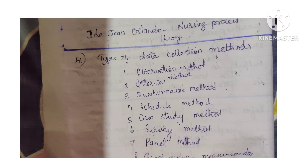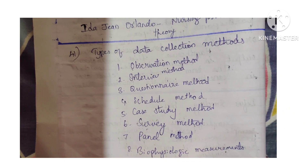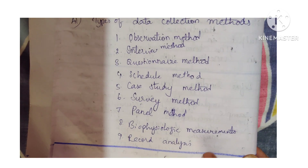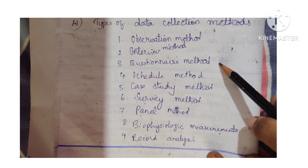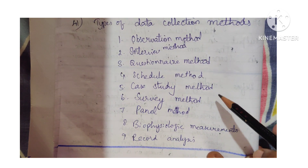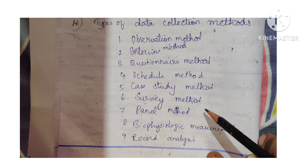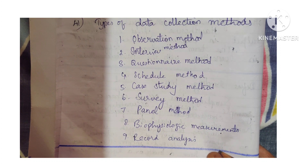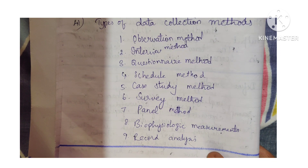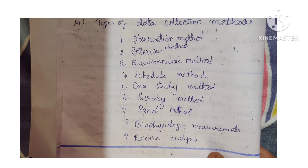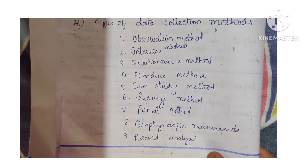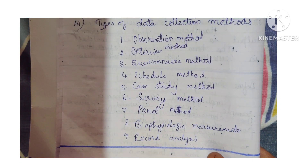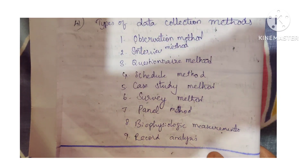Question 41: Types of data collection methods. There are many types: observation method, interview method, questionnaire method, schedule method, case study method, survey method, panel method, bio-physiological measurements, and record analysis. If you can remember and write at least 4 to 5 types, you will get good marks.